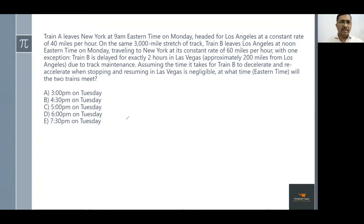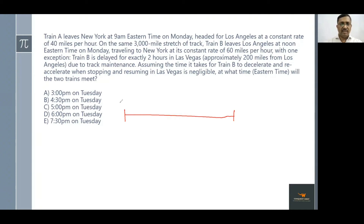Let's read the first sentence: 'Train A leaves New York at 9 AM Eastern Time on Monday, headed for Los Angeles at a constant rate of 40 miles per hour.' So what we understand is that Train A is moving from New York to Los Angeles, started at 9 AM, moving at 40 miles per hour. Don't miss out on taking down any information.